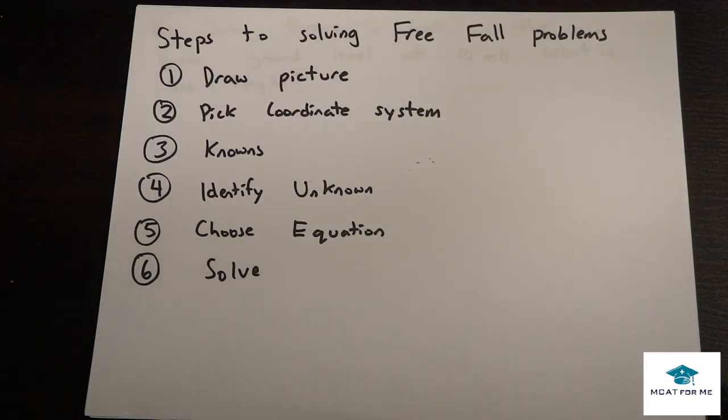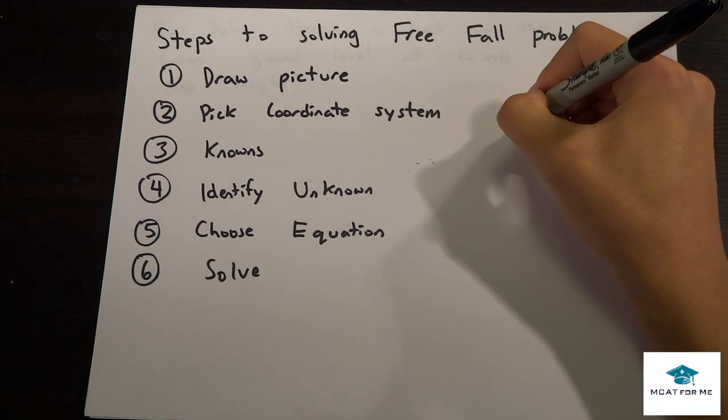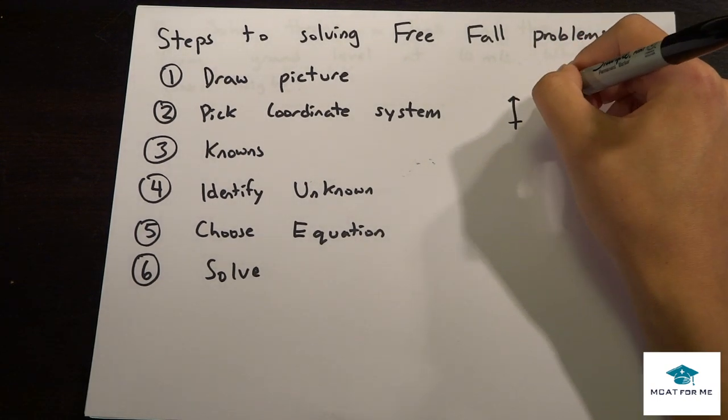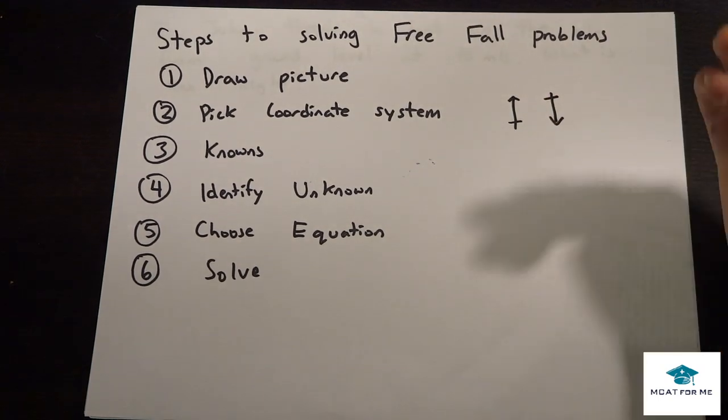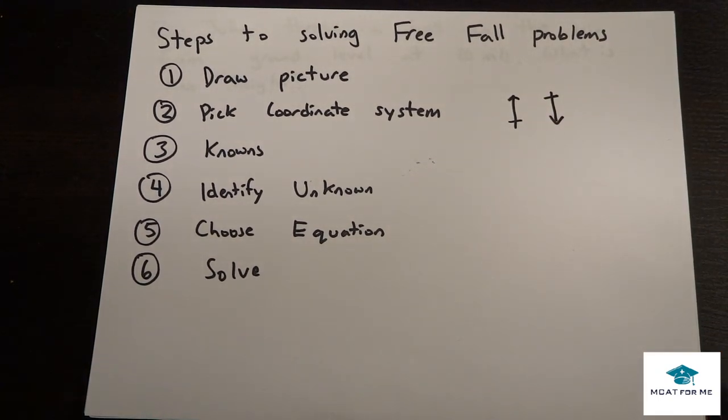The steps to solving these problems are: first thing we want to do is, of course, draw a picture. The second one, we want to pick a coordinate system. Are we going to say that this is positive, or is this positive? Then the third one we want to do is write out the knowns. What do we know from the word problem?